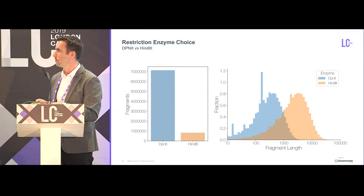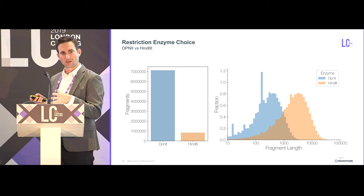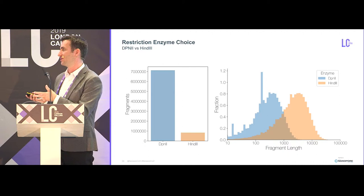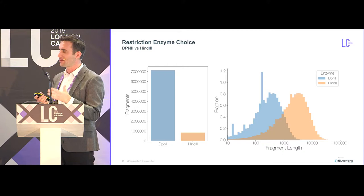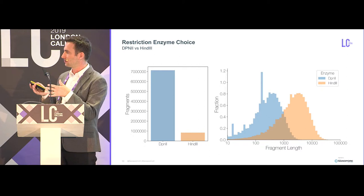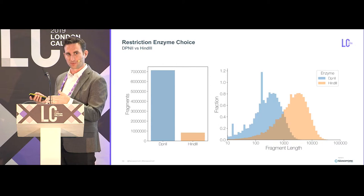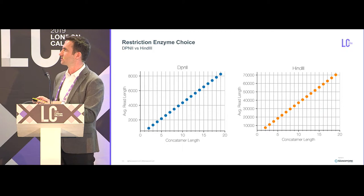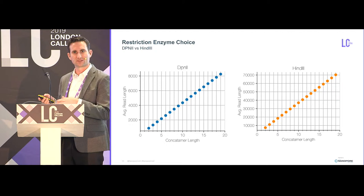There is a tradeoff though. DpnII is the common enzyme used in Hi-C methods — it generates a ton of fragments, but they're short, between 100 bp and 1 KB. We tried this and the mapping rate was quite low, but that was pre-flip-flop, so it's something we'll go back to. For all the data I'm showing now we've used HindIII, which is a six-cutter — DpnII is a four-cutter — and the average fragment length is between 1 KB and 10 KB, but you get fewer fragments, which reduces resolution. With DpnII, a concatamer length of 20 could be captured on an 8 KB read on average, whereas you'd need a 70 KB read to capture the same size concatamer with HindIII.